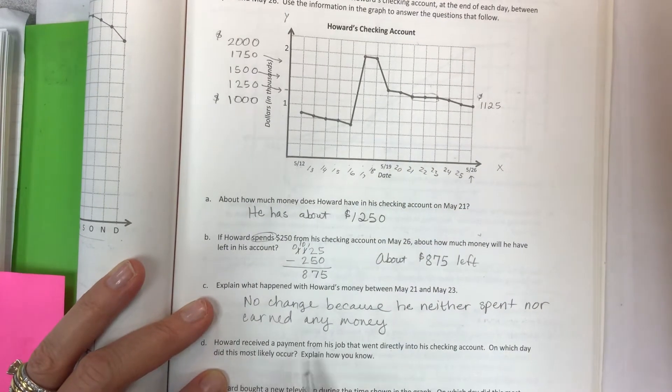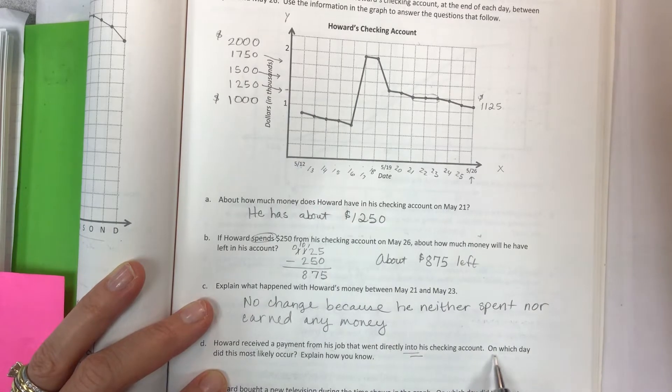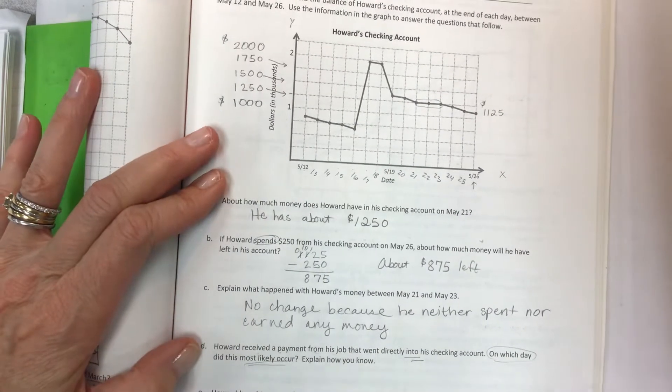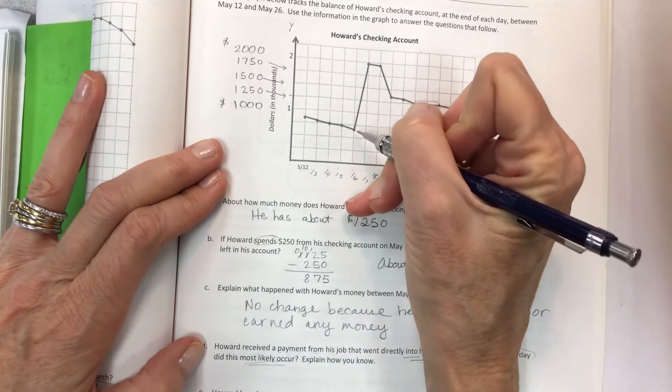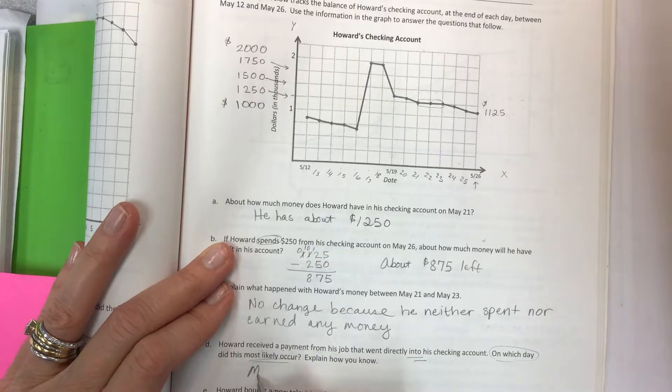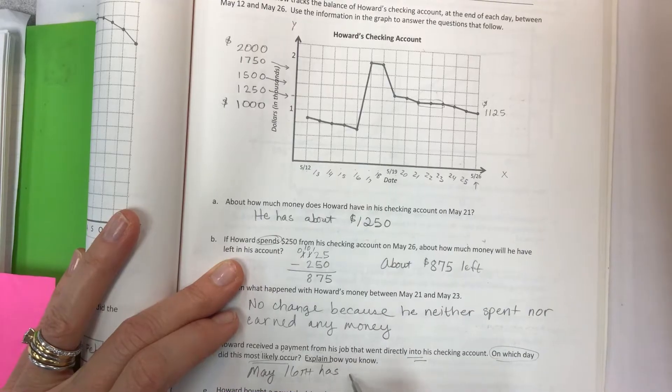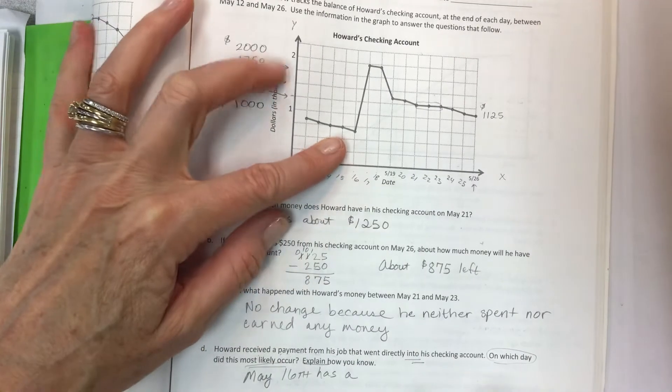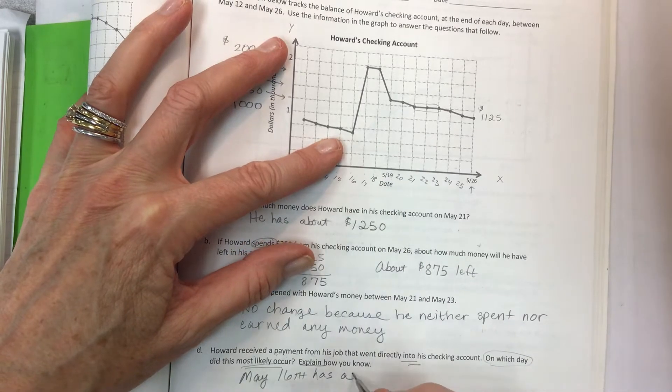Howard received a payment. He got money from his job that went directly into his checking account. On which day did this most likely occur? Explain how you know. If money goes into the account, then the value of your account goes up. So the day when it goes up is most likely May 16th. May 16th, you have to explain, has a large spike. It has a large increase. So it has an increase.